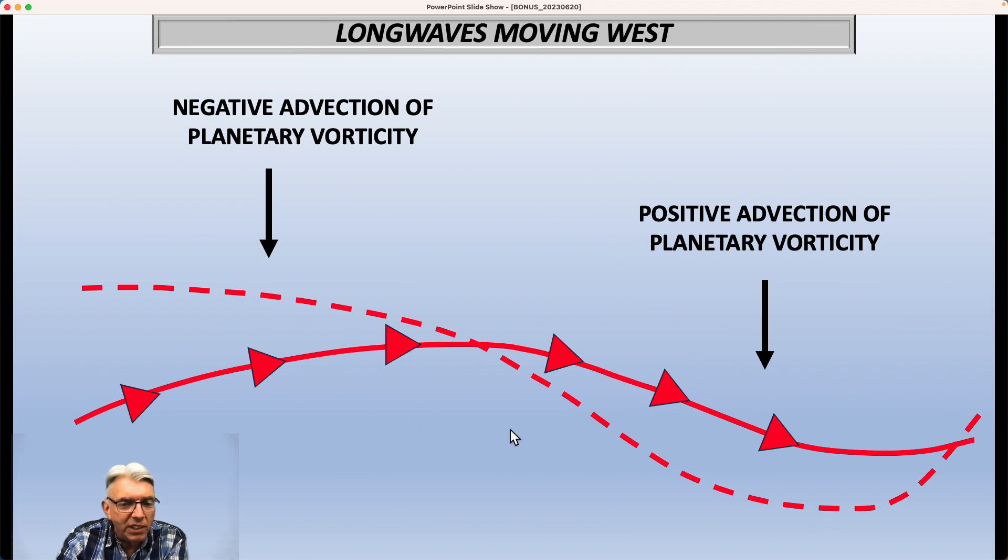So now, instead of having the ridge axis right in here, now the ridge axis has shifted back to the west and the trough axis, instead of being here, has now shifted back into here. And that's all due to the fact that the Earth's rotation causes lower levels of vorticity in the low latitudes, higher values in the high latitudes, and if you have a long fetch of winds either coming somewhat from the north or somewhat coming from the south, then that has an important effect on the overall flow pattern.